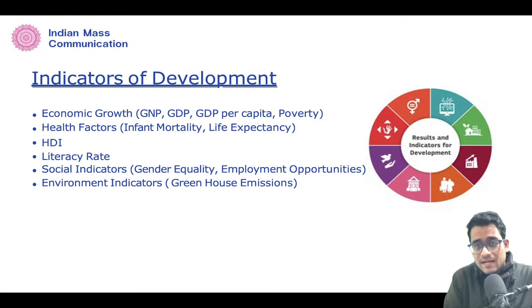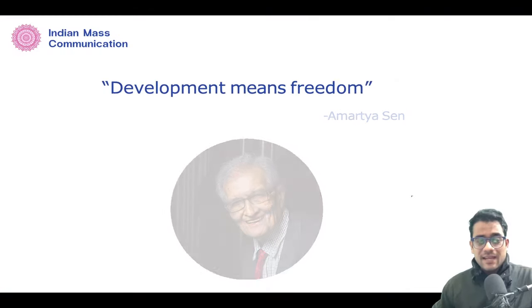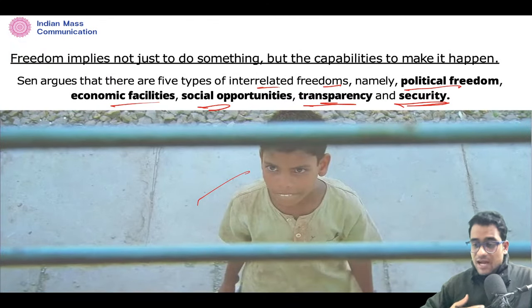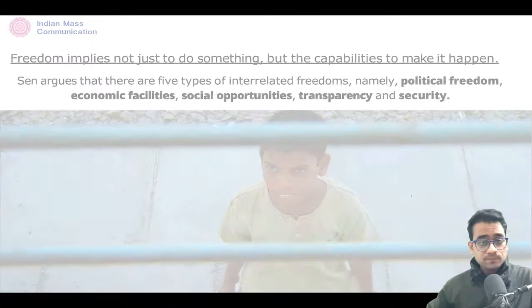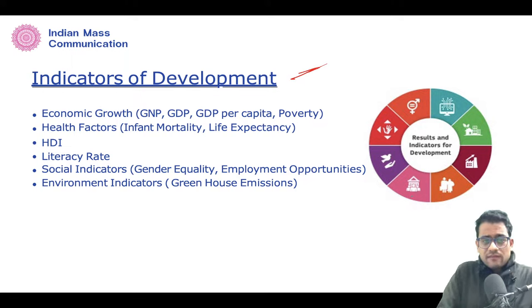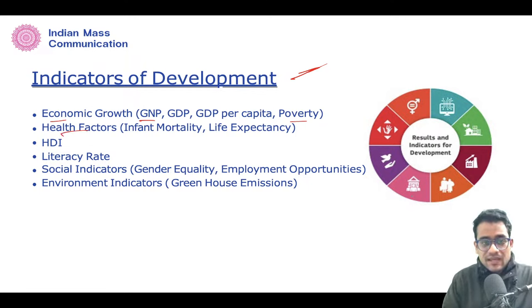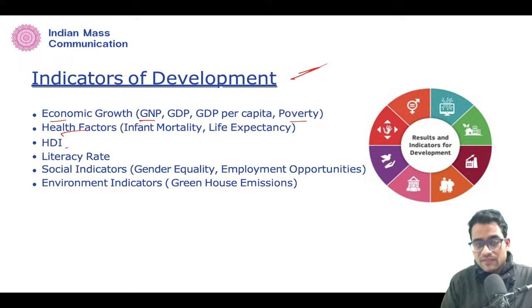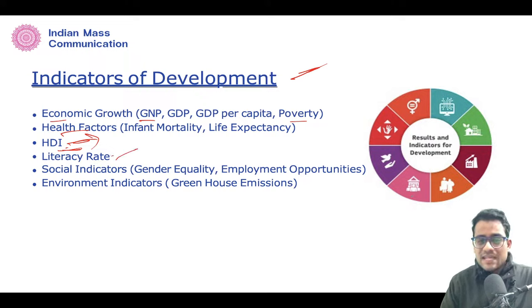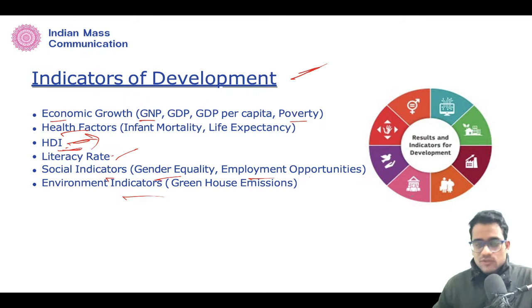To simplify: development is freedom, development is reaching our maximum potential using what we have. There are several indicators of development. From an economic perspective: GNP (Gross National Product) and GDP (Gross Domestic Product), GDP per capita, or poverty level. From a health perspective: infant mortality, life expectancy. Then there is HDI — Human Development Index — which we will discuss further. Also literacy rate, social indicators like gender equality, and employment opportunities.